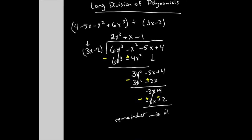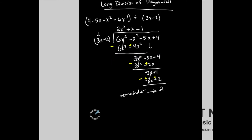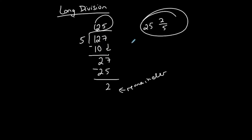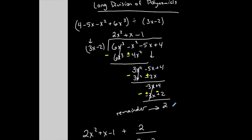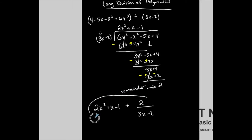Now I'm done with the process. How do I represent my answer? Take the top — 2x² plus x minus 1 — plus the remainder over the divisor: 2/(3x minus 2). Just like with numbers, take the top and add the remainder divided by the divisor. The remainder is not 0, which is very important to identify. When the remainder is not 0, that means 3x minus 2 is not a factor of this polynomial.